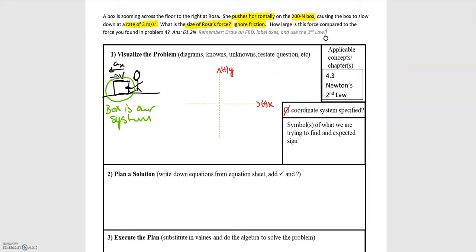Now that we've defined our system, we can draw the free body diagram. Over here on our coordinate system, we draw out our forces. The first force is the non-contact force — the weight force. The weight force points downwards and is due to gravity, which is mg. We're told that weight force is 200 Newtons.